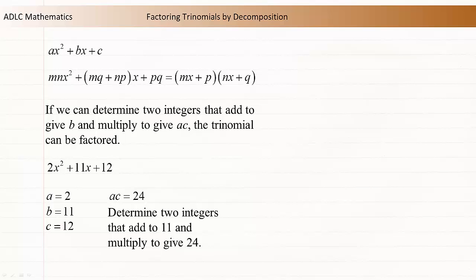ac is 24, so we need to determine two integers that add to 11 and multiply to give 24.